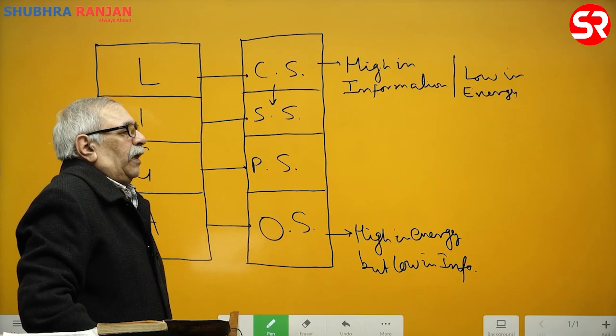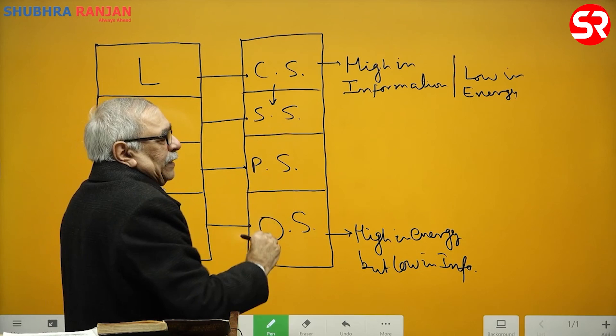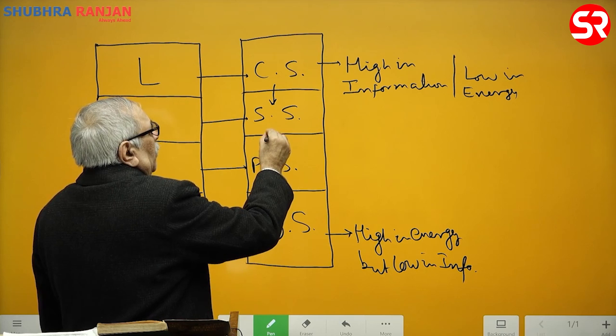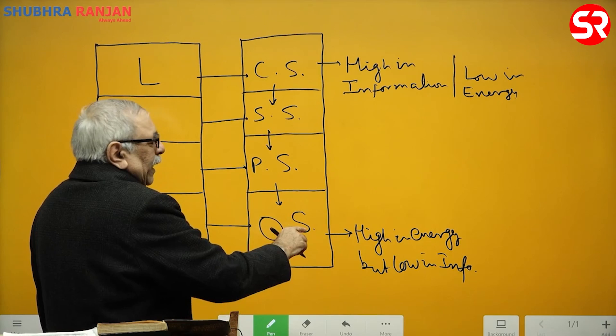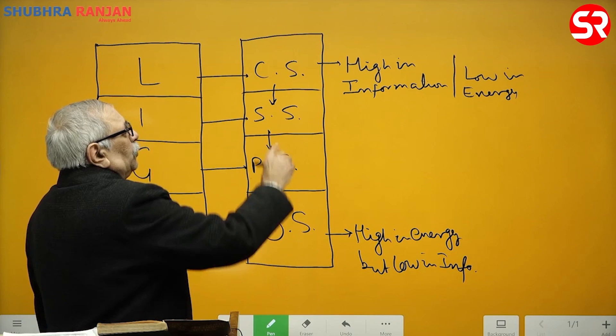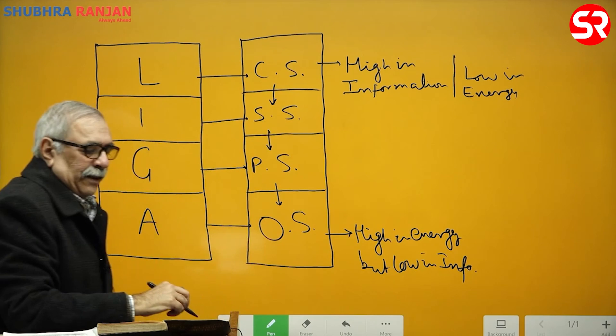When individuals internalize these norms and values in the course of interaction within the social system, their personality is shaped. So social system controls the personality system, and the personality controls the mindless energies of the muscles of the organismic system. That is how the system high in information controls the system high in energy.